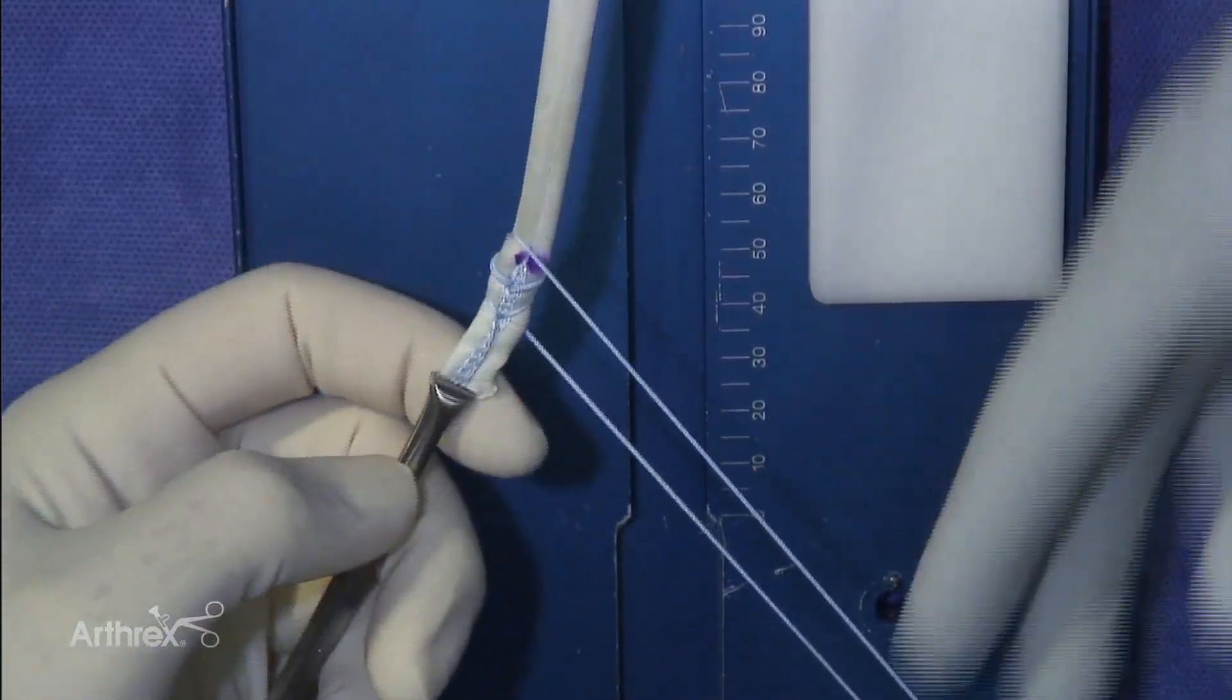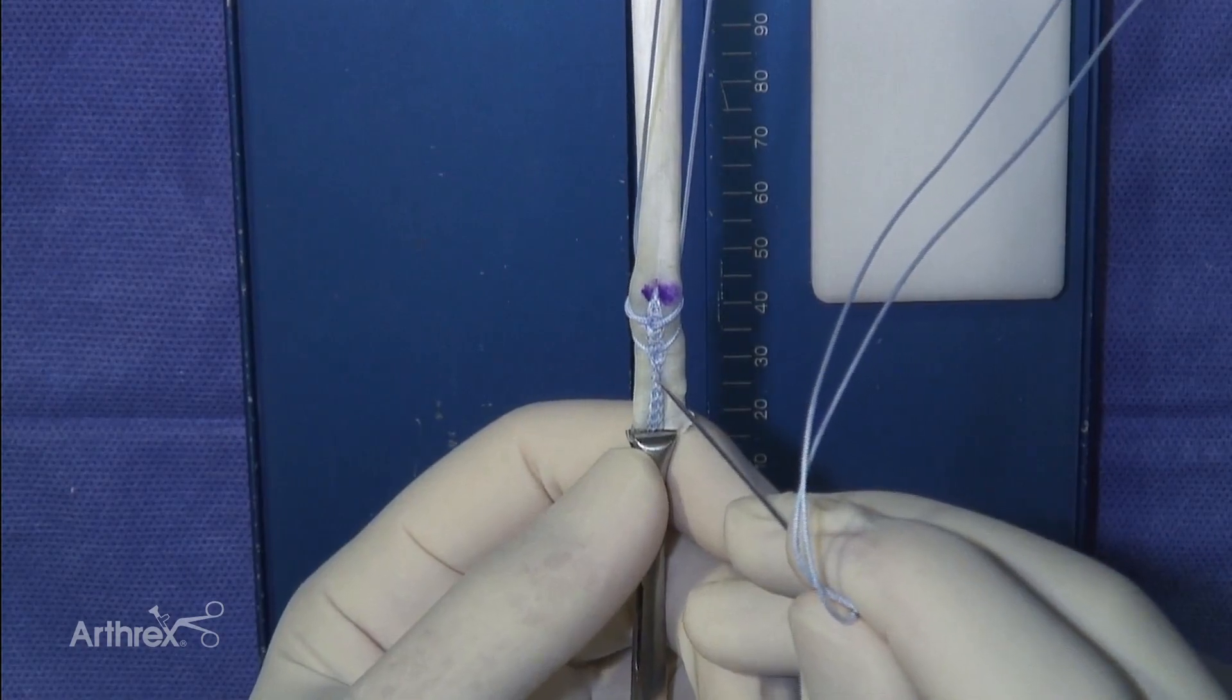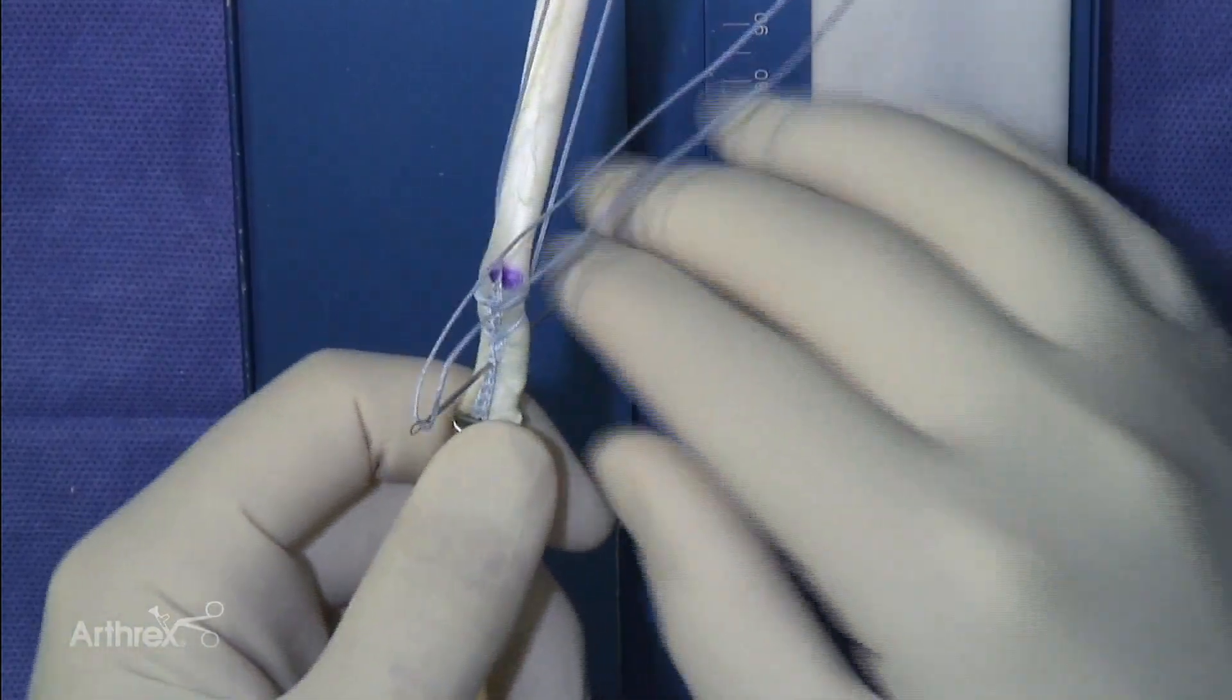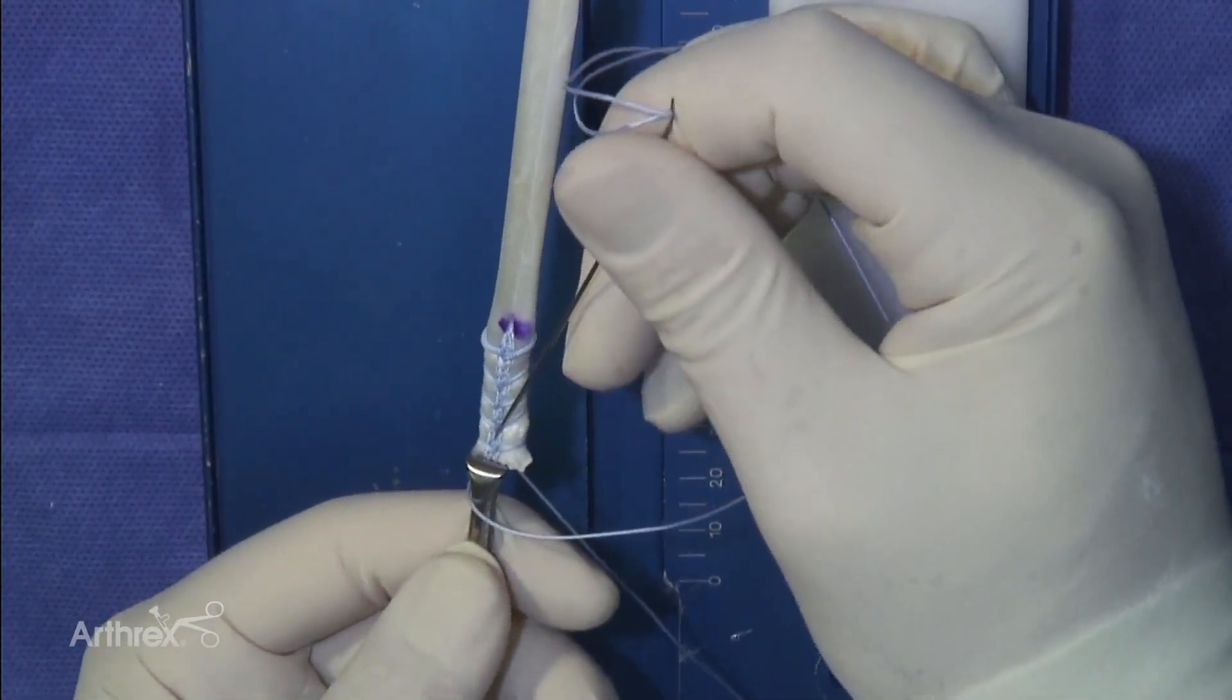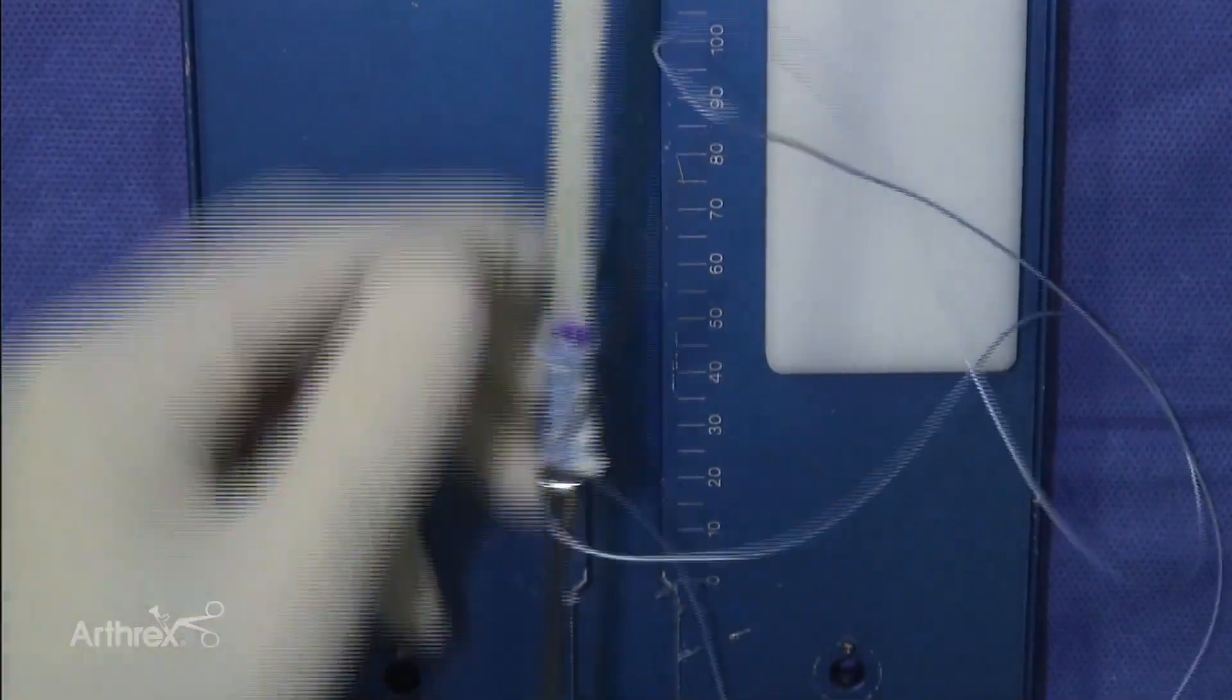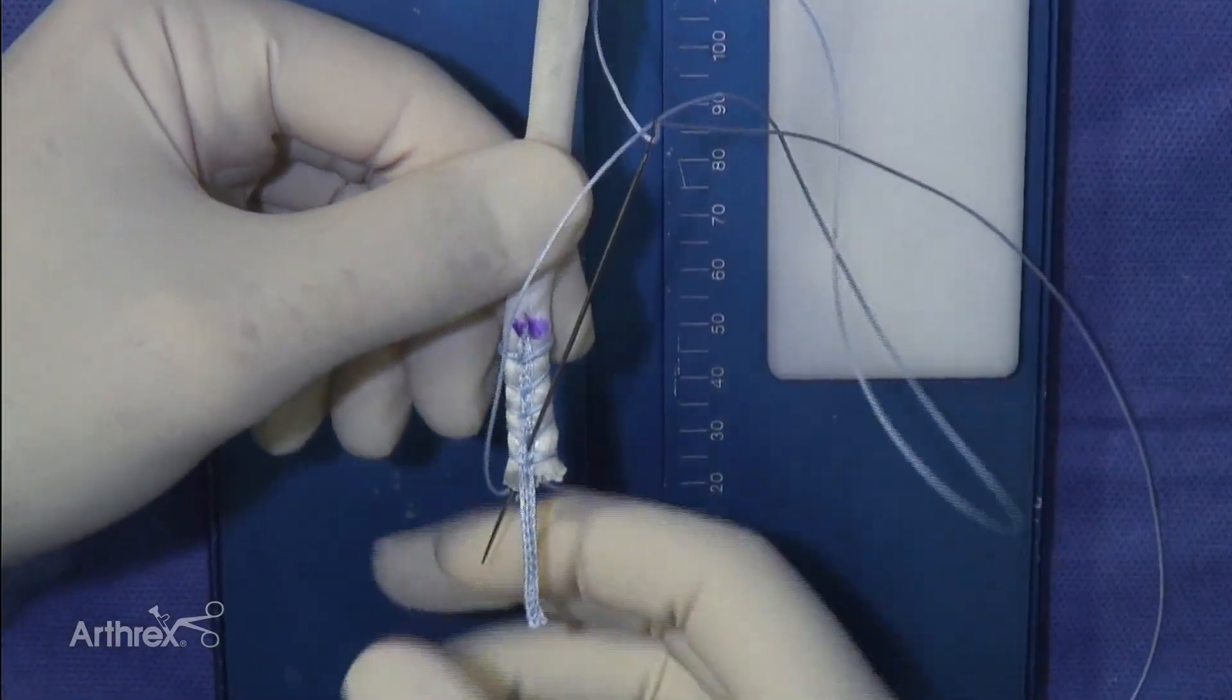Continue the stitching pattern to the end of the graft. For the last pass, place the needle proximally to the previous stitch in order to create a locking stitch. Direct the needle out the end of the graft.